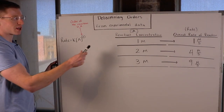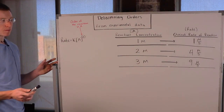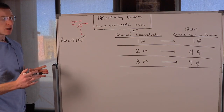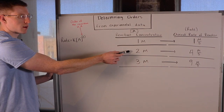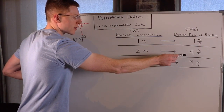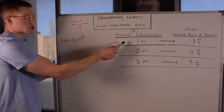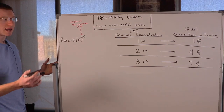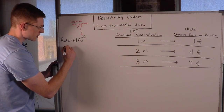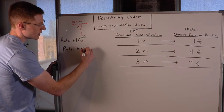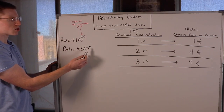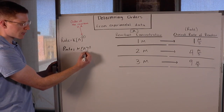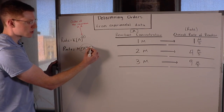Now look at this new data. Starting at an initial concentration of 1 molar for A the rate was 1 molar per second. But when I doubled the initial concentration of A to 2 molar, I actually multiplied the overall rate by 4 — now it's 4 molar per second. And when I tripled the initial concentration of A to 3 molar, the overall rate increased by a factor of 9, to 9 molar per second. So the math works out such that A is raised to the second power — the order is 2 in A — because doubling A multiplies the rate by 4 and tripling A multiplies the rate by 9.